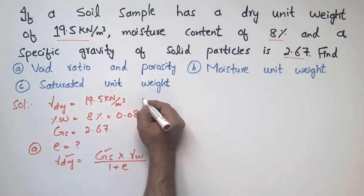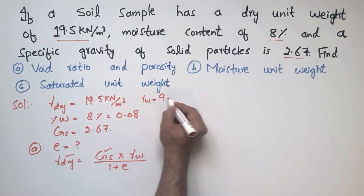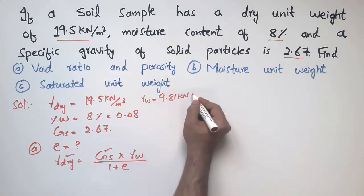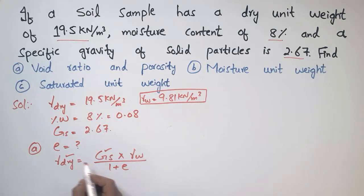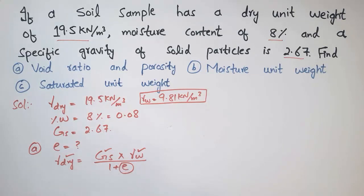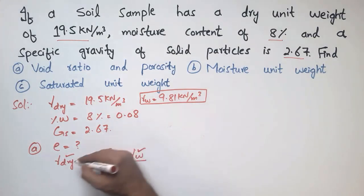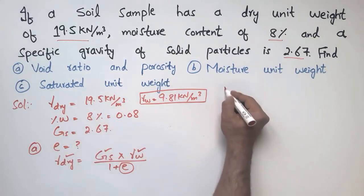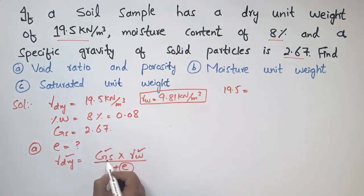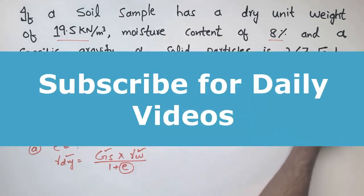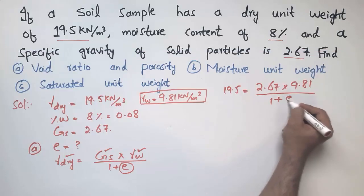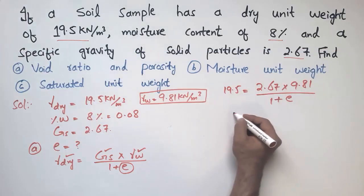The unit weight of water γ_w is the standard value of 9.81 kN/m³, which is also known to us. So the only unknown is the void ratio. Plugging the values into the equation: 19.5 = (2.67 × 9.81) / (1 + e). After solving, I get a void ratio of 0.343.